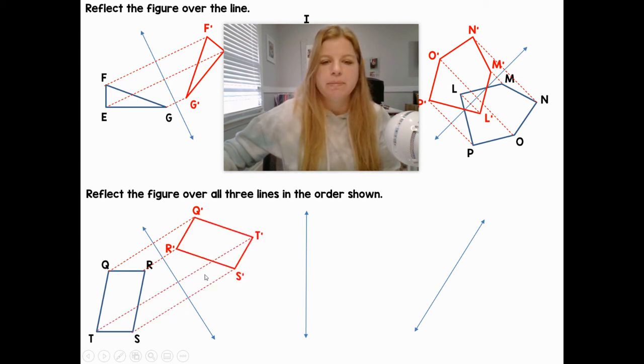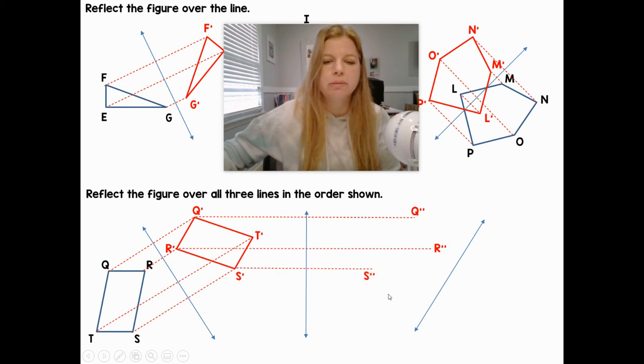Then I would take this image and now reflect this image of Q prime, R prime, S prime, T prime over the second line. So now I'm constructing a new perpendicular line where this measure is equal to this measure, getting Q double prime, R double prime, S double prime, and then T double prime. Now I have my double prime figure.